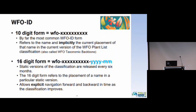There's a 16-digit form, which is the same number plus a four-digit year and two-digit month. We make static versions of the classification every six months. The 16-digit form refers to the placement of a name in a particular static version. It allows explicit navigation, forward and backward in time, as the classification improves.